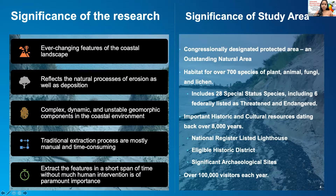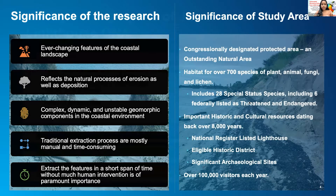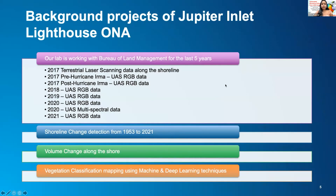Elaborating on the significance of the study area, there is an impressive number of species located in the ONA — over 700 species, out of which 28 species are considered special status. Apart from that, the ONA receives an average of about 100,000 visitors. We at Florida Atlantic University have been working on the site for the past several years, mostly on archaeological investigations, and we perform shoreline change analysis and volume change along the shore.